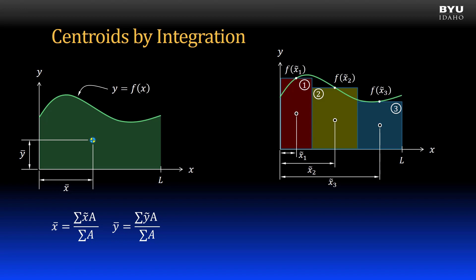We take the height of each rectangle by evaluating the function at each x tilde location. We then compute each rectangle area as its width times its height. With this information we can compute x bar.